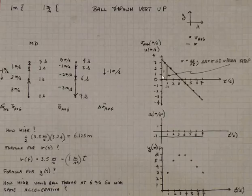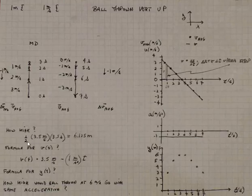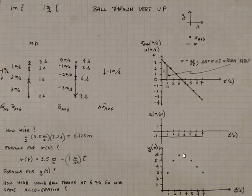I can find the maximum height by finding the area of the upper triangle on the V versus T plot. That area is the positive displacement the ball has in going from its initial position to its apex, which corresponds to the V equals zero position. The displacement from the starting point is one-half base times height — one-half times 3.5 meters per second times 3.5 seconds — which turns out to be six and one-eighth meters. So the ball does indeed go a little bit higher than six meters, as intuition suggests.